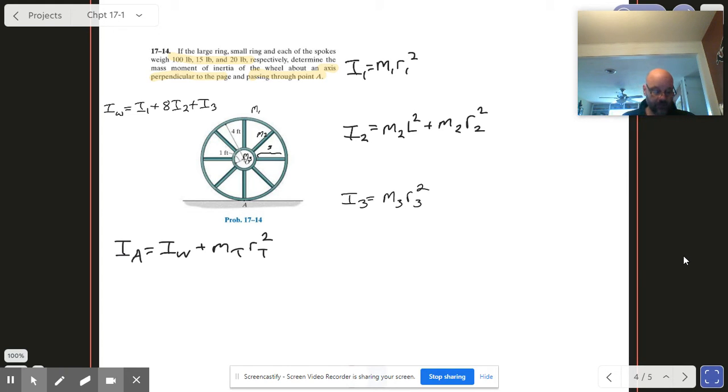The way we'll do this is we're going to say that the whole thing is made up of these individual pieces: I1, I2, and I3, where I1 is the moment of inertia of the large hoop, I2 is the moment of inertia of one spoke, and I3 is the moment of inertia for the inner hoop.